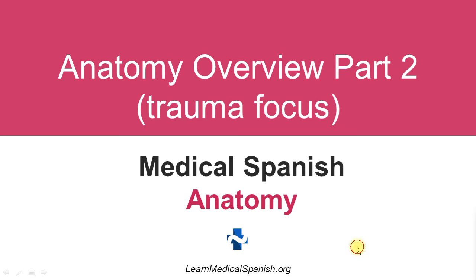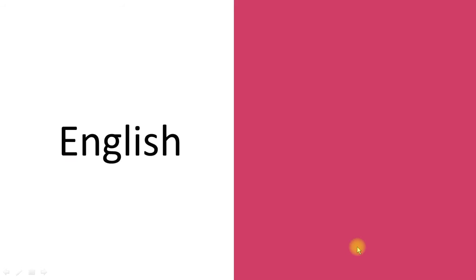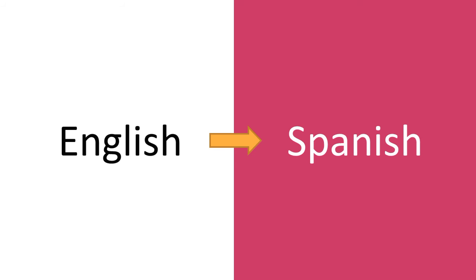So let's go ahead and get into it. First I'll say the terms or phrases in English, then I'll pause and say them in Spanish. When I pause, spend some time thinking about how to say it in Spanish — see if you can figure it out before I say it. Then I'll say it in Spanish two times so that you have a chance to repeat it a couple of times.